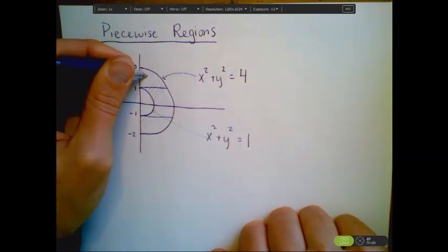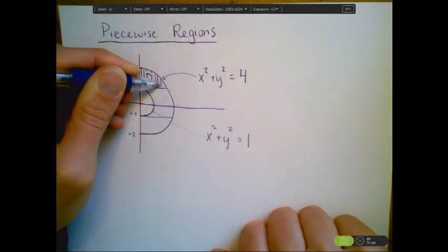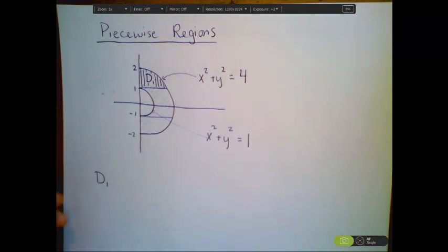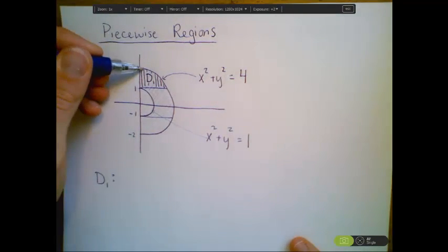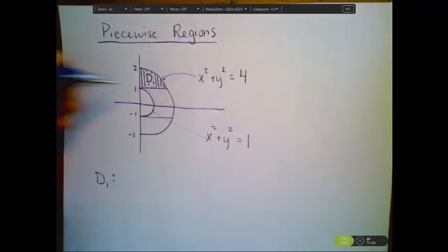So let's talk about D1, this top piece up here. We're going to break it up as a type 1 region using these vertical slices. So for D1, first we need to say, what are the bounds on our y values? They're starting down here at the constant line y equals 1.